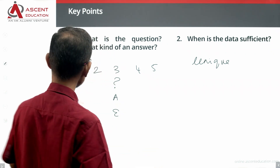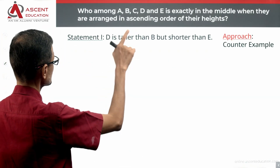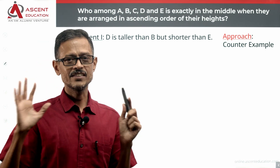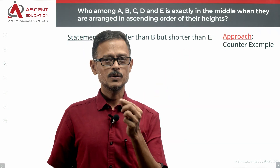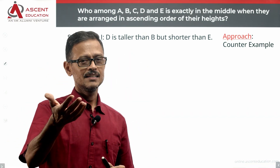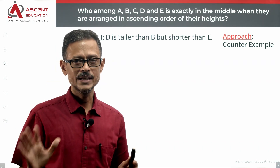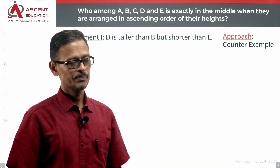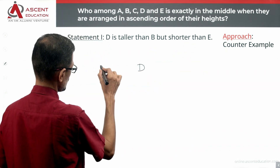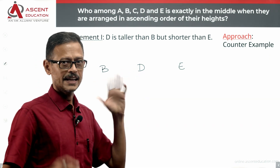Let's evaluate Statement 1 alone. Statement 1 says: D is taller than B but shorter than E. So in ascending order, B is to the left of D, and D is to the left of E — giving us the partial order B < D < E. We don't know anything about A and C from this statement.